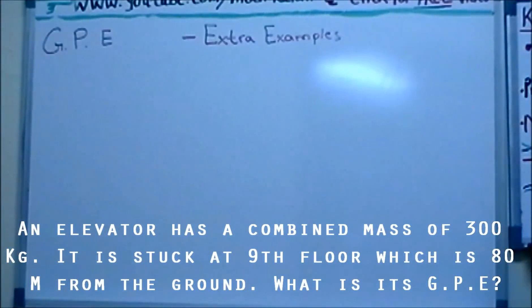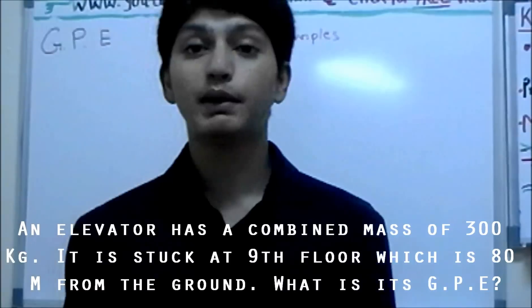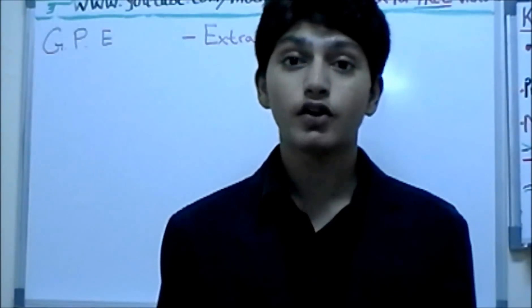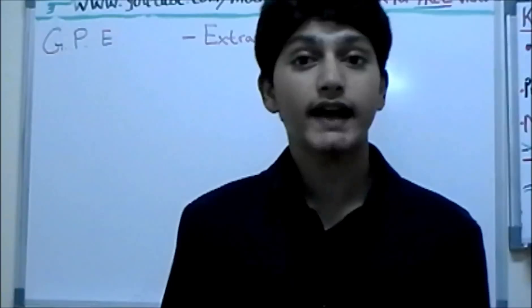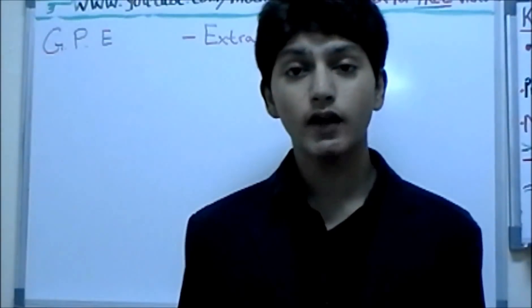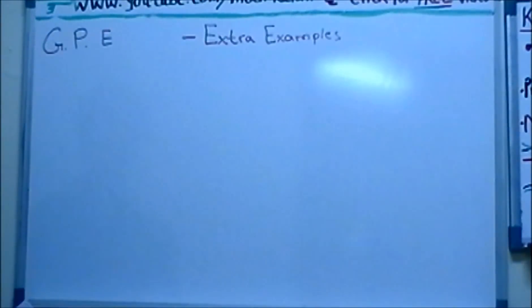Moving on to the next example. An elevator has a combined mass of 300 kg. It is stuck at the 9th floor, which is 80 meters from the ground. What is the gravitational potential energy? I use the word combined mass because people might be in the elevator — let's assume electricity is out. So the elevator is stuck at the 9th floor, which is 80 meters above the ground, and its combined mass is 300 kg. Let's find out the gravitational potential energy of the elevator.